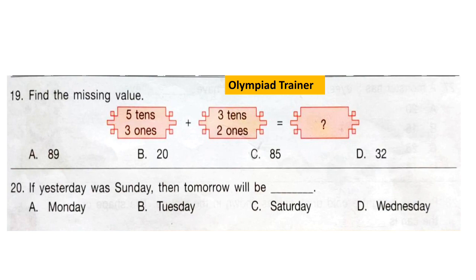Question 19: Find the missing value. You have to add two numbers: the first number is 53 and the second is 32. Add them and the answer will be 85. 85 is given in option C, so the correct answer is option C.